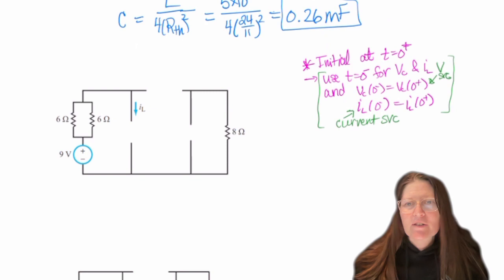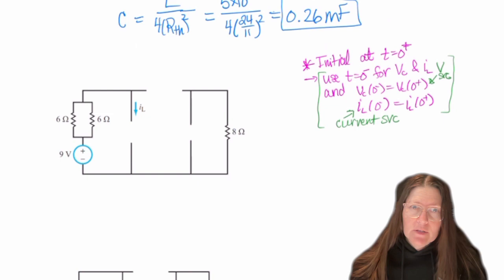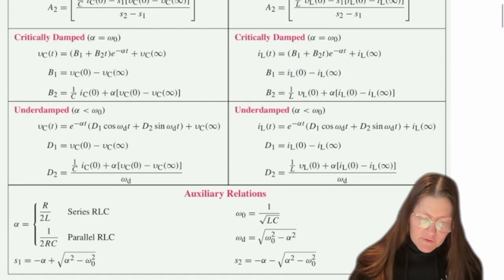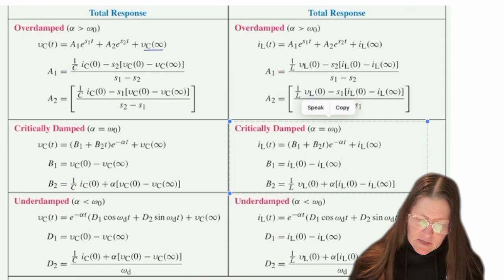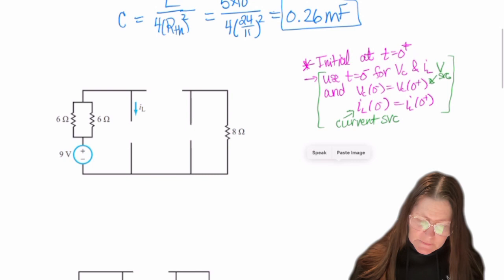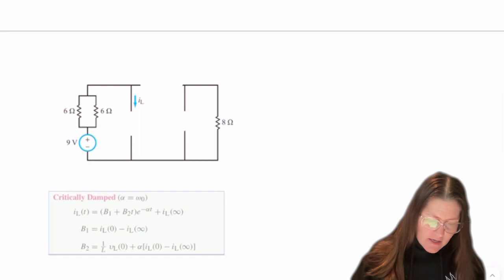So I know the critically damped and so I'm going to grab the equation set for critically damped in parallel. And with critically damped, I need to know the IL(0), IL(infinity), and then VL of zero.